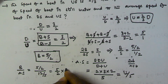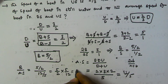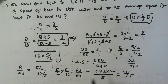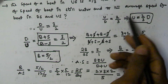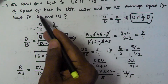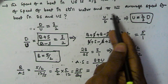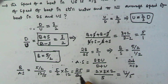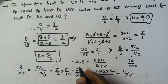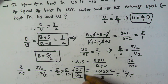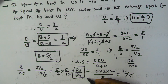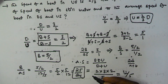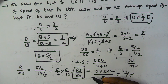So the ratio of B to average speed equals (5/2) divided by (12/5), which equals 5/2 × 5/12, giving 25/24. The ratio of the speed of the boat in still water to the average speed of the boat in downstream and upstream is 25:24. I hope you got this one — thank you very much for watching this video, and please subscribe to my channel.